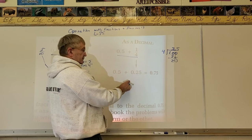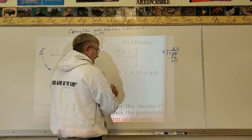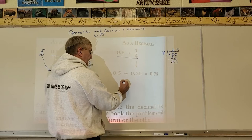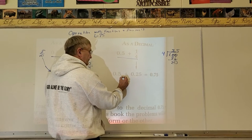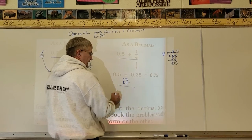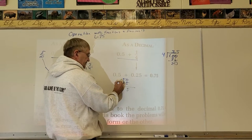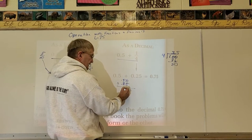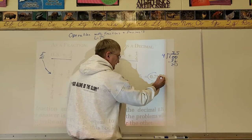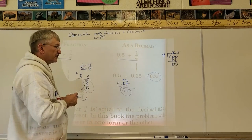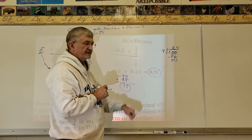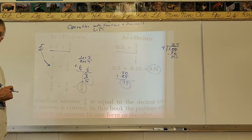Now it's set up to solve. Line up the decimals you're adding: 0.25 and 0.50, filling the empty place with a zero. Ready to add: 5, then 5 plus 2 is 7, giving 0.75. And that's what they get. I'll just be putting 0.75 as the answer on the computer.